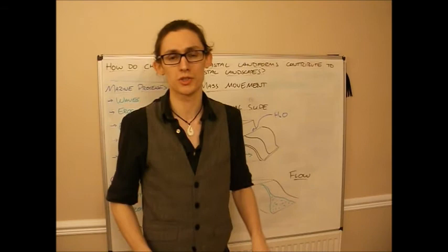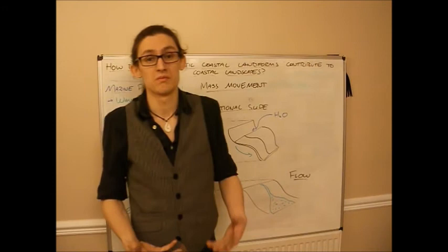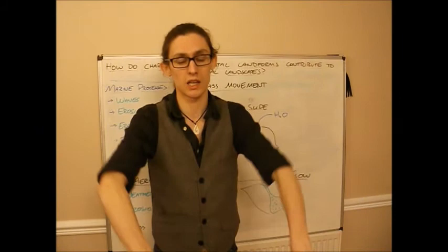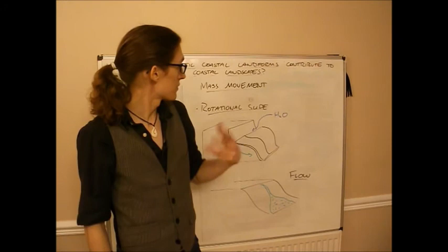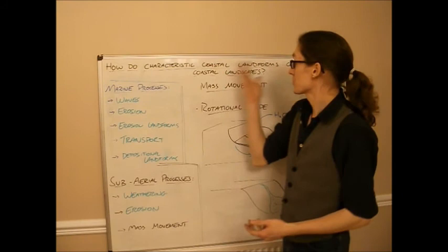Finally there's flows. If you've just got unconsolidated rock, particularly weak, if you've got very little holding it together, often again water, it'll just flow down basically like a liquid or a semi-liquid. It'll just slide down the hill slope. And again it's a curved failure surface. It just looks like a mudslide basically. So there's the five types of mass movement.